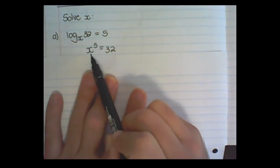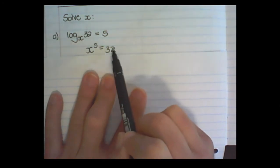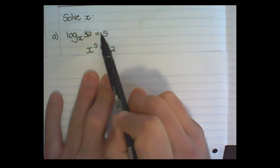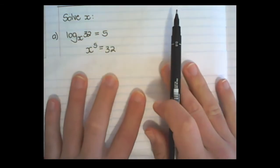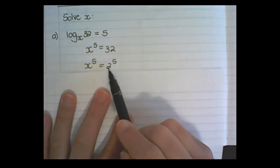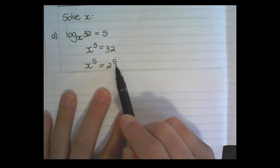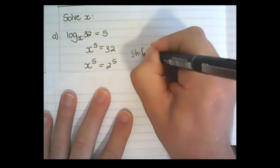So let's follow what we have learned up until now. x becomes the base of the exponent, the argument becomes the answer, and that 5 becomes the exponent. Now I need to rewrite 32, and I can write it as 2 to the power of 5. If you have bigger numbers, on your calculator you press shift, fact.